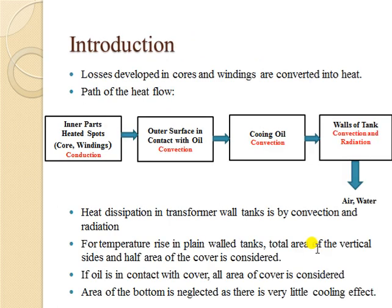Here we are going to understand how heat flows from the inside parts of the transformer to the cooling medium at the outside. Heat is generated during electrical operations — current flows in windings and flux flows in the core — creating heated spots in the inner parts. Through conduction, that heat reaches the outer surface in contact with oil, and then through convection it moves into the cooling oil.